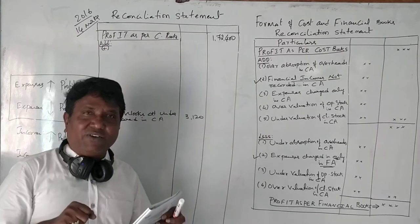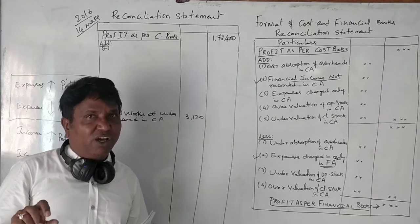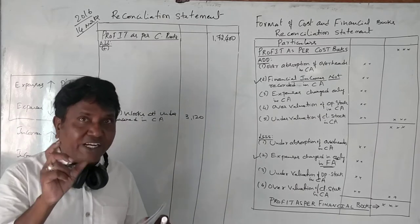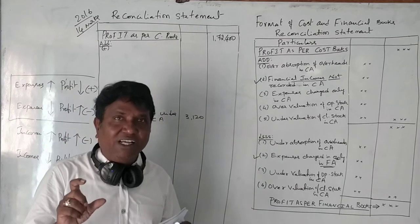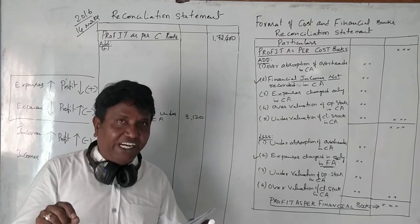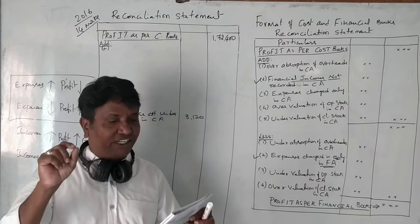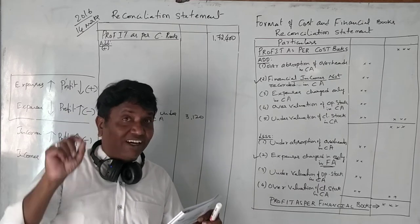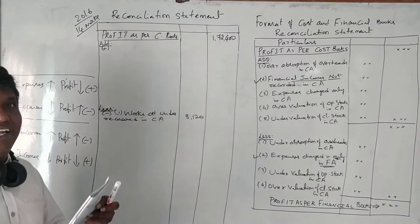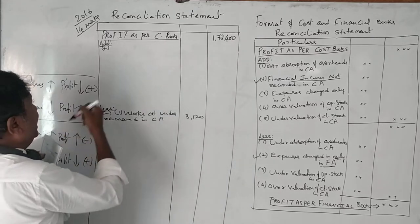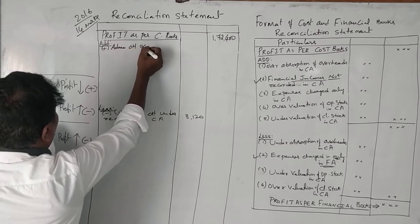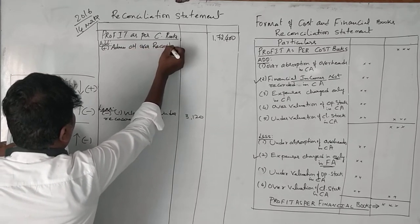Second point: administration overhead recorded in excess. Note that in costing books only we call expenses as overheads. So administration overhead in cost accounting is recorded in excess — meaning over-recorded. If any expense is over-recorded in cost accounting, it should be added. So administration overhead over-recorded or over-absorbed is 1,700 rupees.